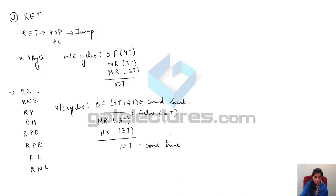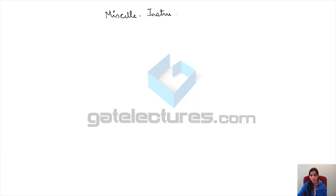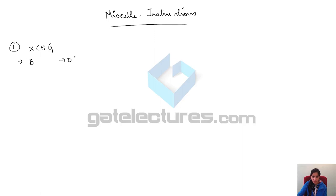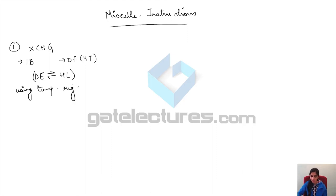Now there are some miscellaneous instructions that are not related to any particular addressing mode but will help you in programming. The first is XCHG — a one-byte long instruction with only an opcode fetch of 4 T-states. What XCHG does is simply swap or exchange the contents of the DE and HL register pairs using temporary registers.